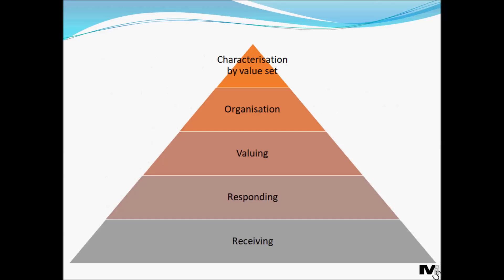Let's take a look at the actual taxonomy. Just like the cognitive version, it is represented as a triangle, with the basic level at the bottom and the advanced levels at the top, the highest being characterization. We start with receiving, moving on to responding, then valuing, then organization, and finally characterization — also known as characterization by value set. The goal of any learning session is to take learners through this entire journey.